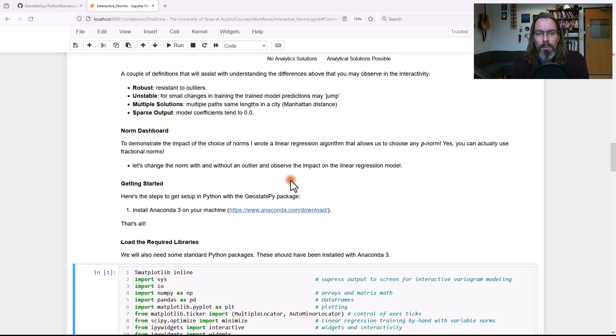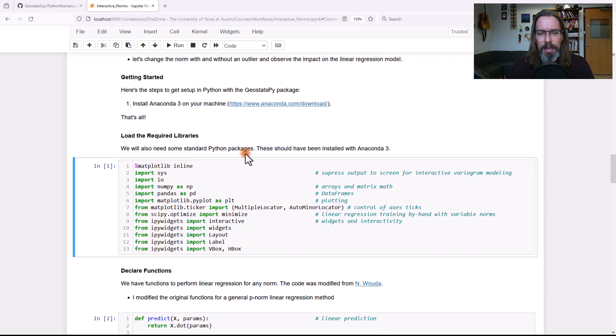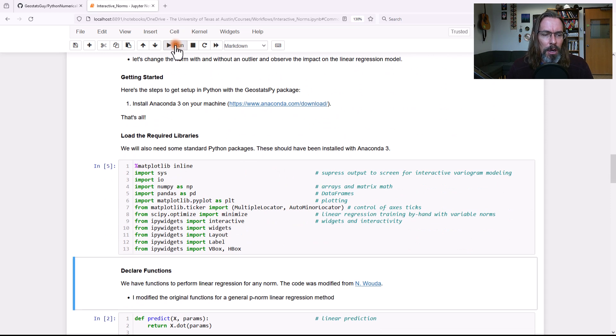The dashboard. I wrote a linear regression algorithm just from scratch, not a big deal, that allows you to change the norm. And so we can pick our norm and see what linear regression is going to do. And we're going to also have the ability to put an outlier in, move an N plus 1 data, which will be controlled by us. Okay, let's go ahead and let's get right to the dashboard. I'll run this code.